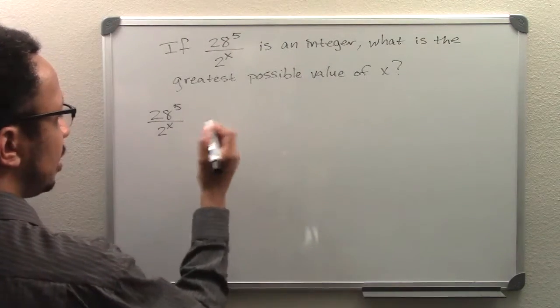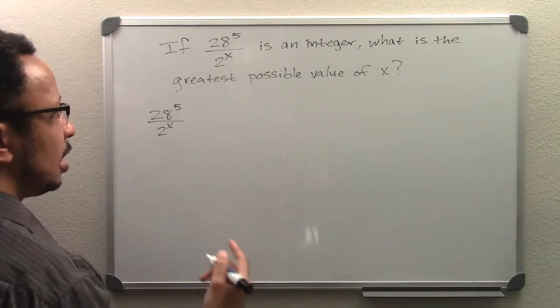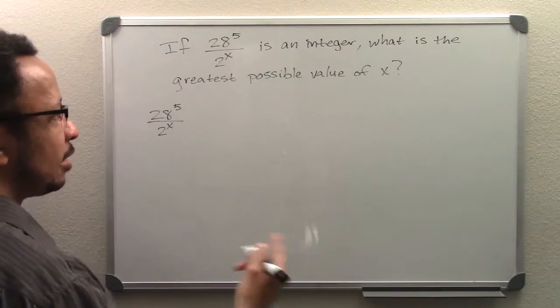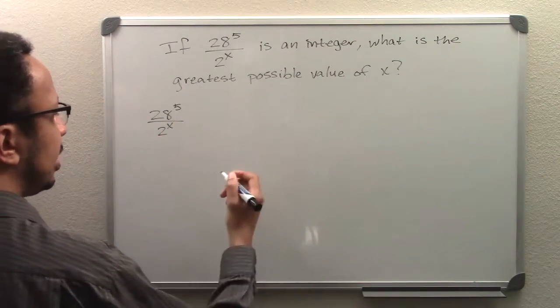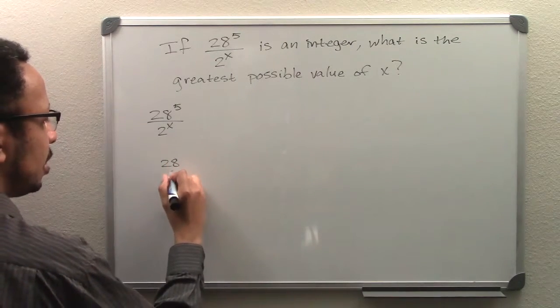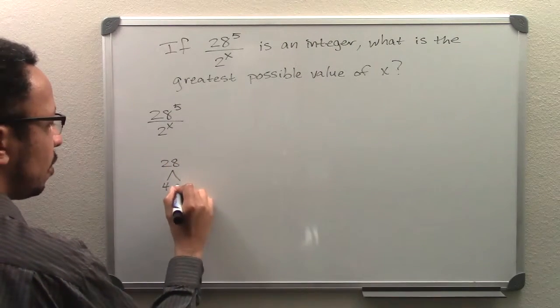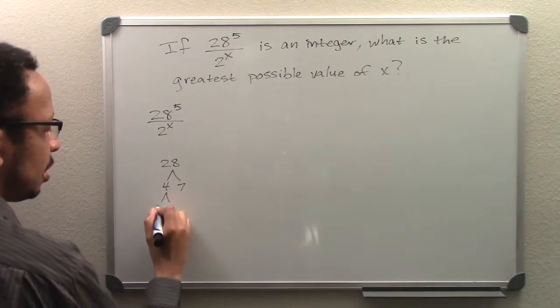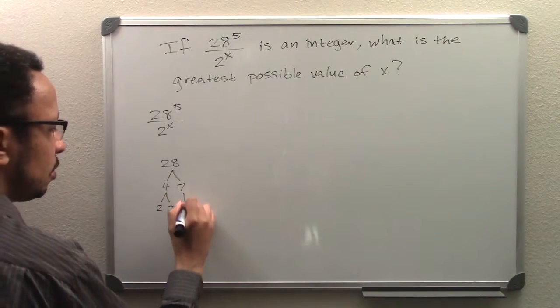What I'll start out doing is I'll start creating a prime factor tree for 28. That's a very simple one. We have 4 and then we have 7. Then over here we have 2, 2, bring down our 7.